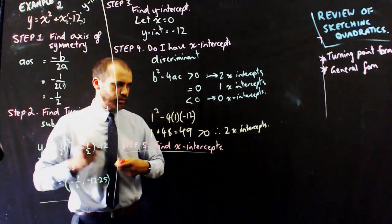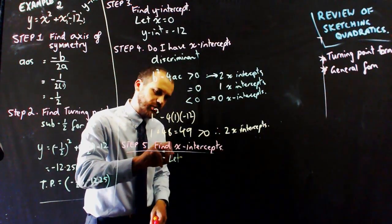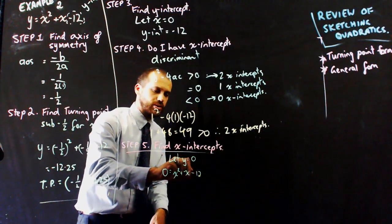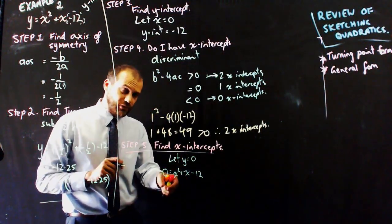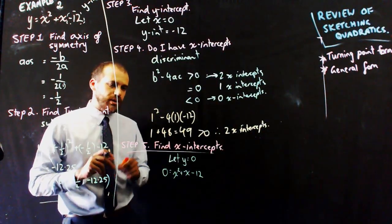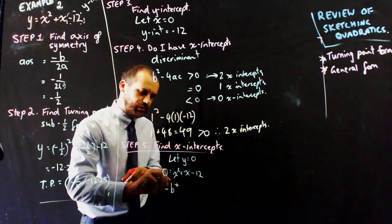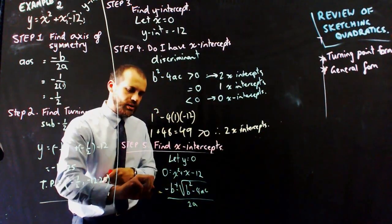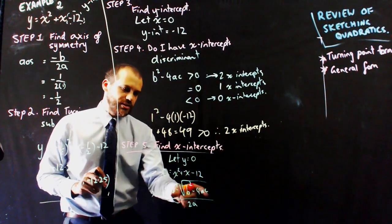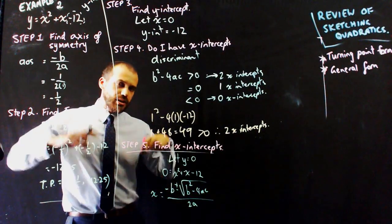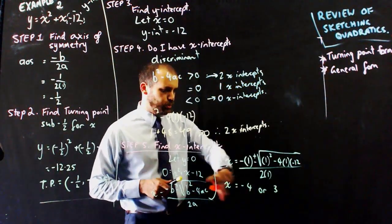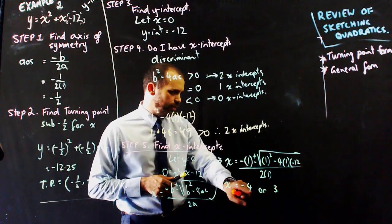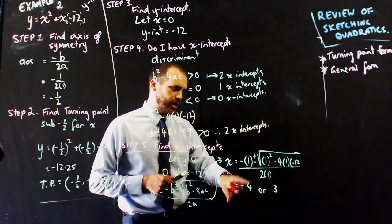Now find the actual x-intercepts. Let y equal 0, so 0 equals x squared plus x minus 12. You can try factorizing and using the null factor law, but the more fail-safe method is the quadratic formula: x equals negative b plus or minus the square root of b squared minus 4ac, all over 2a. Plugging in the numbers gives two answers: x equals negative 4 and x equals positive 3. Those are the two x-intercepts.